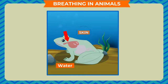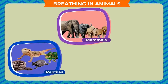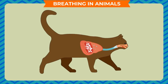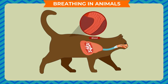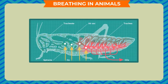Mammals, reptiles, and birds breathe through their lungs. The function of the lungs is to transport oxygen from the air inhaled through the nose to the blood, and to release carbon dioxide from the blood and exhale it through the nose. All mammals breathe through lungs — whales and dolphins, being mammals, breathe through their lungs although they live in water.